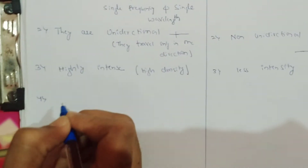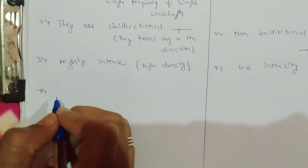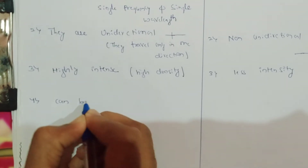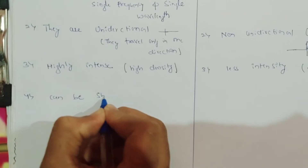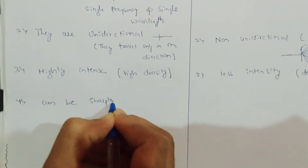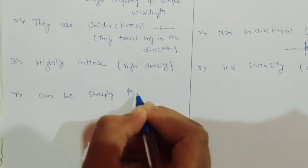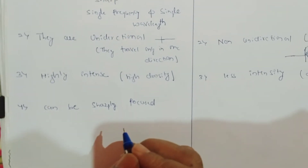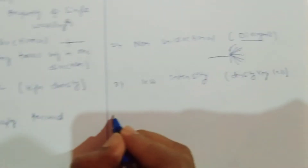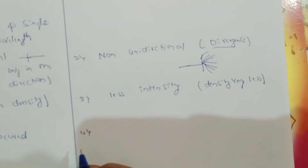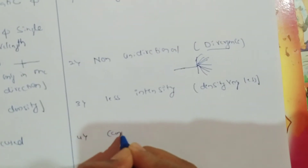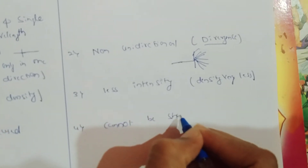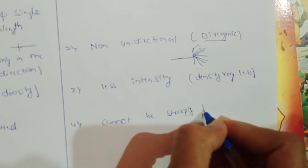The fourth property is that with the help of a laser beam we can focus very sharply. But in the case of ordinary light, it cannot be sharply focused.